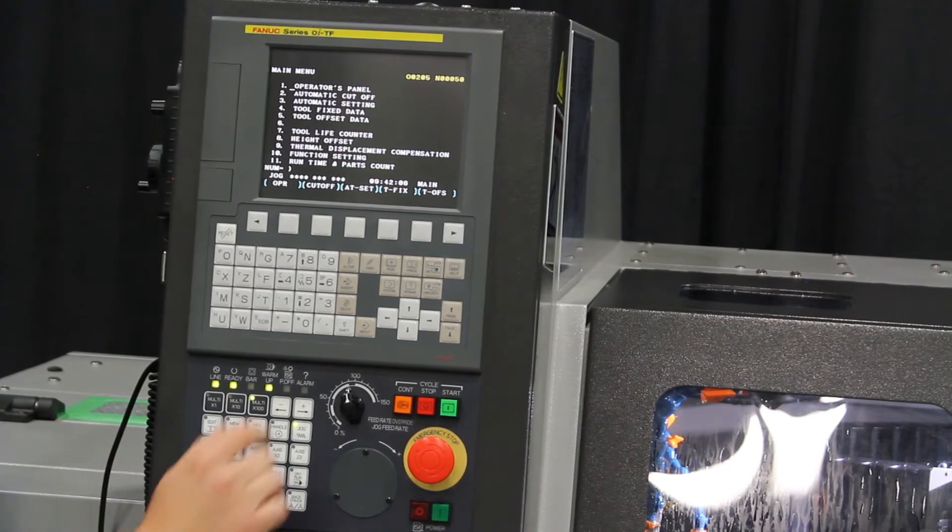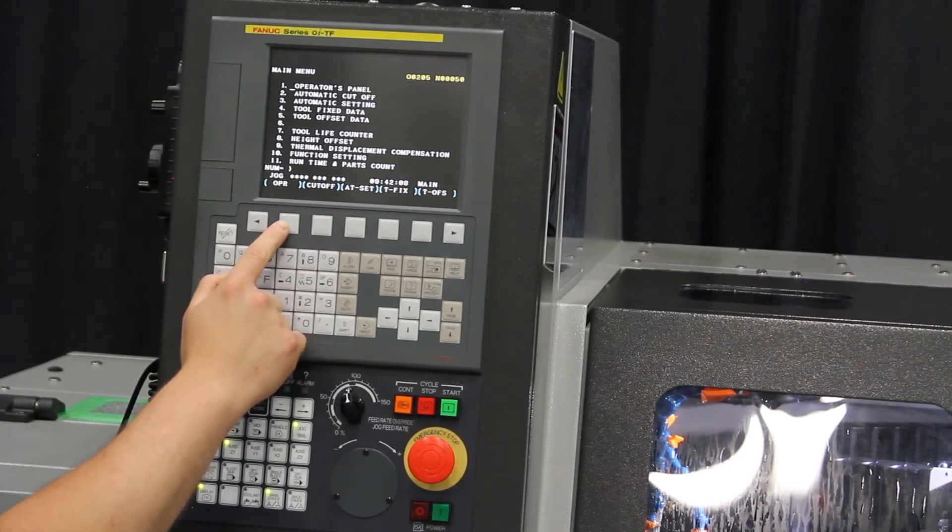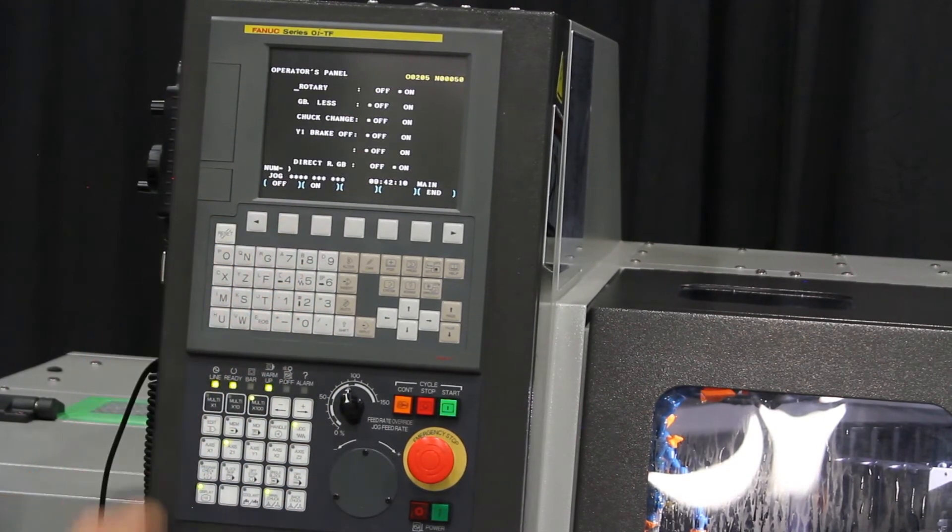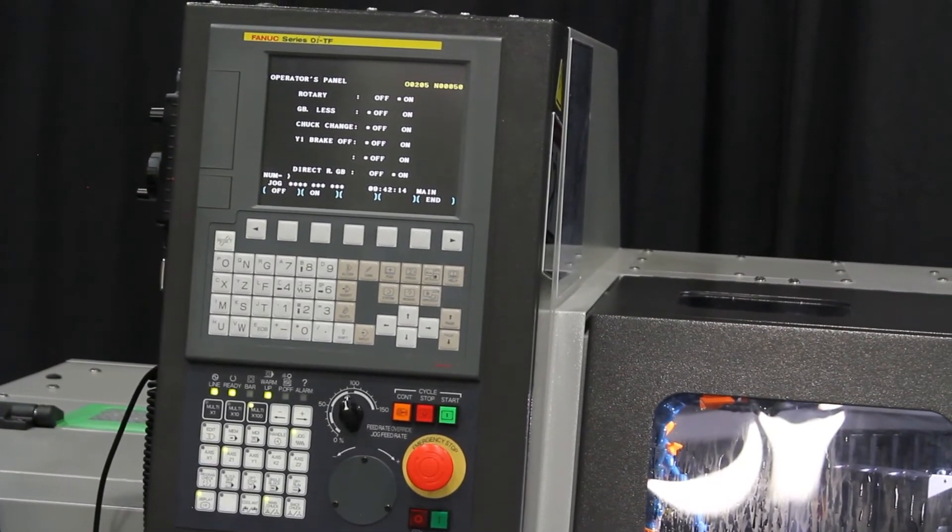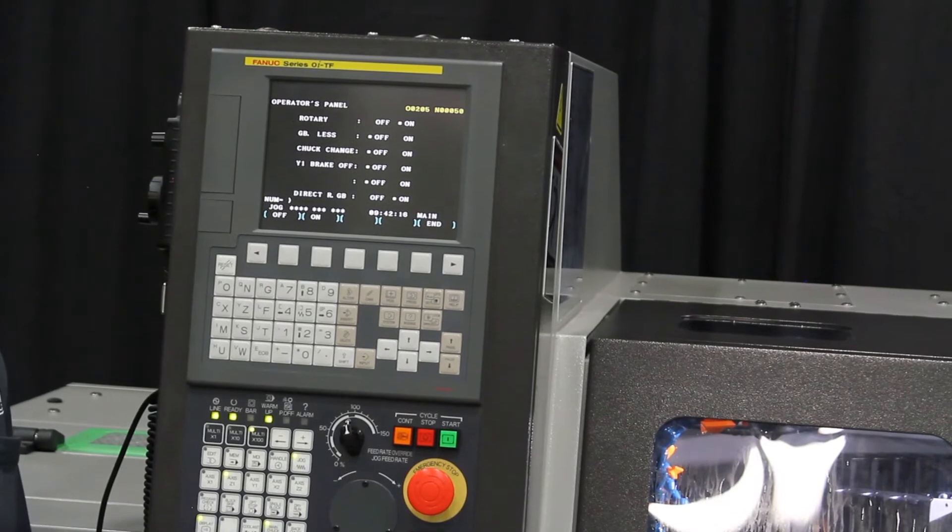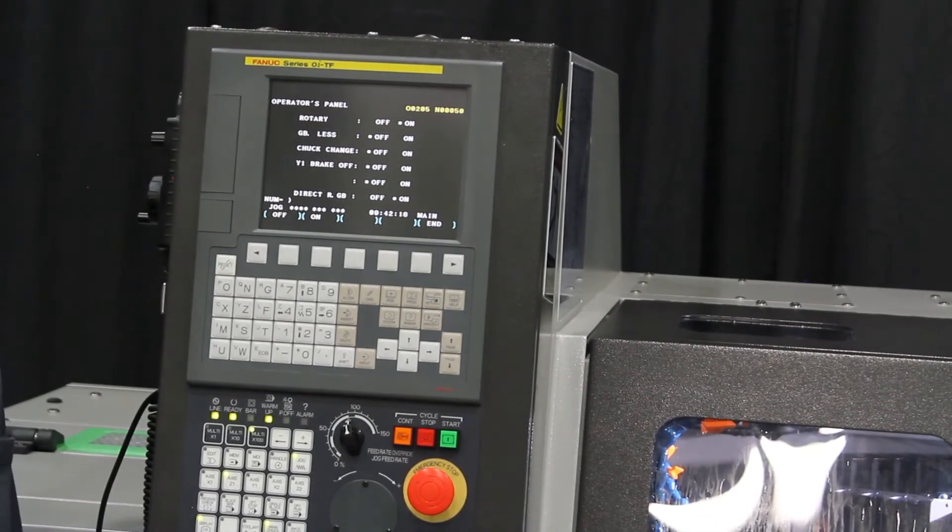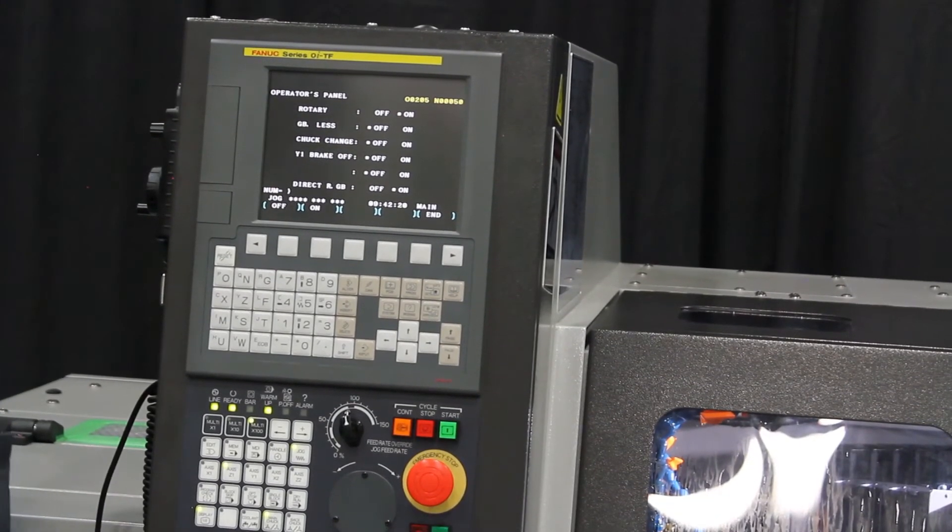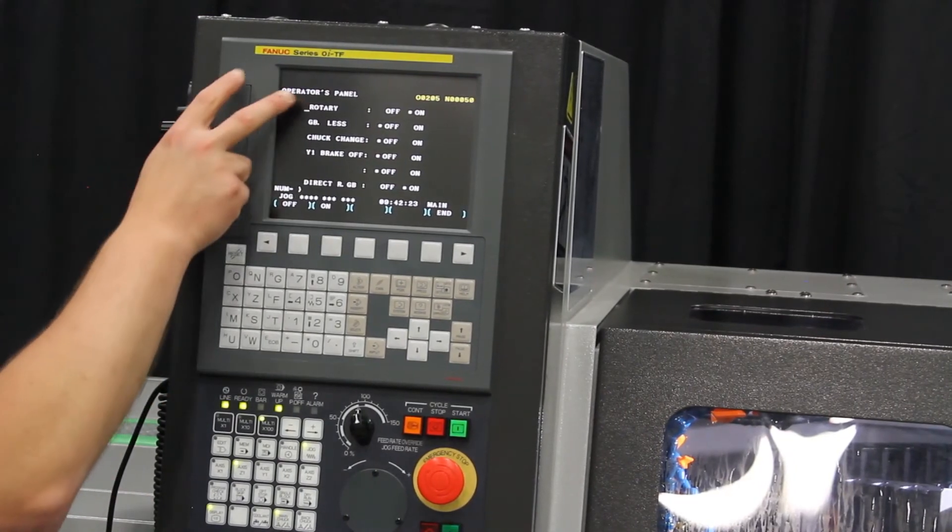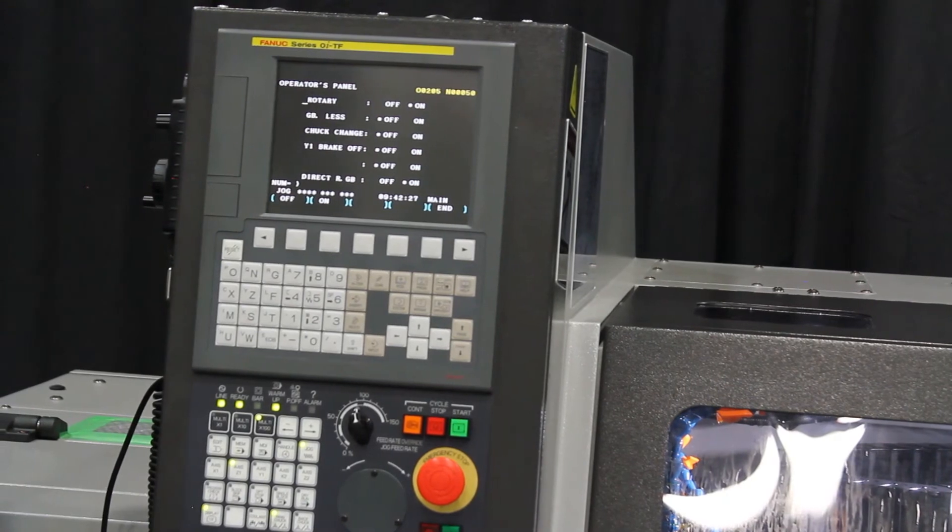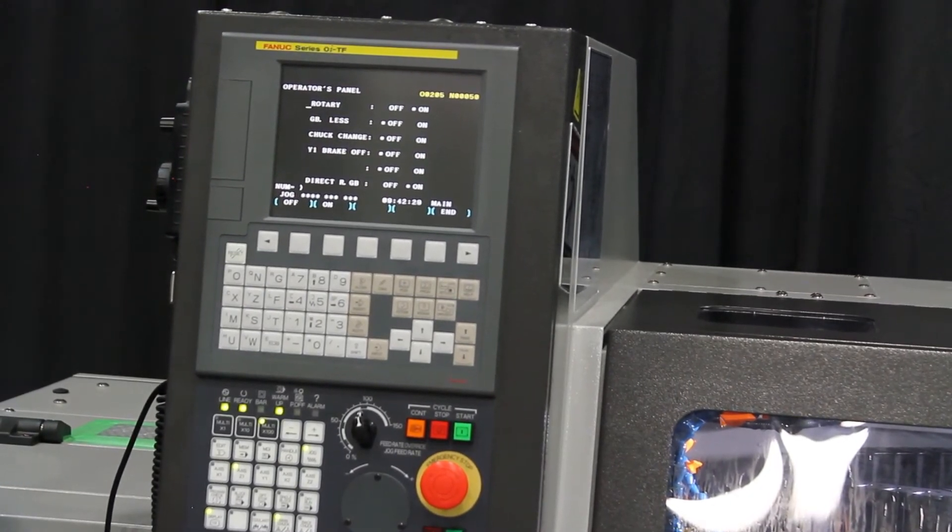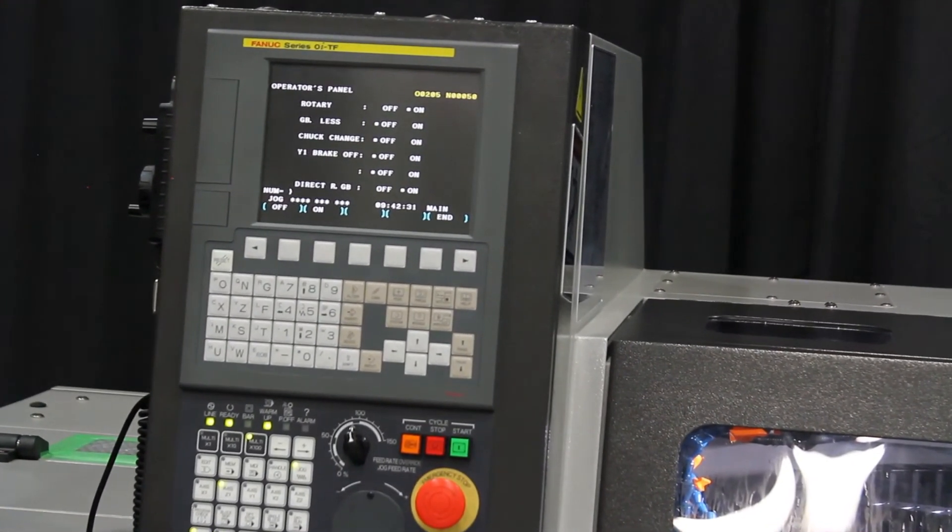We are going to start with one, the operator panel. So I am going to go by soft key, click operator panel. And it is going to show a bunch of options here that are going to be correlated directly into whether you have chuckar, swiss or a cage driven guide bushing. As you can see here we have rotary on and direct rotary guide bushing on. That is going to tell me we are in an electronically driven guide bushing.